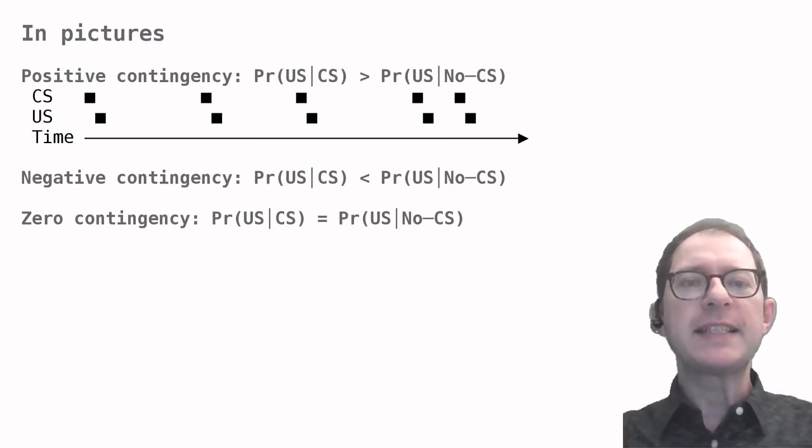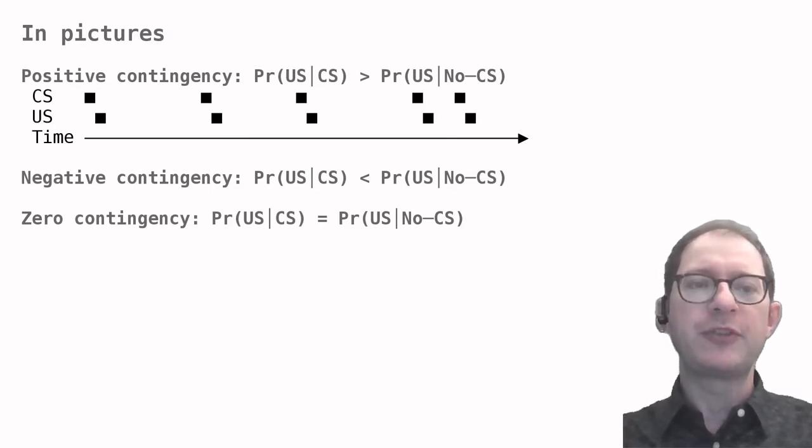The first case is that of a so-called positive contingency between CS and US. This means that when the CS happens, the US is also likely to happen and that the US does not happen without the CS. For example, in this timeline, we see that the US occurs always right after the CS.